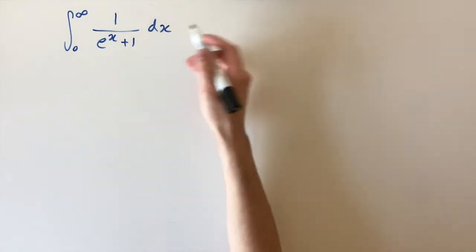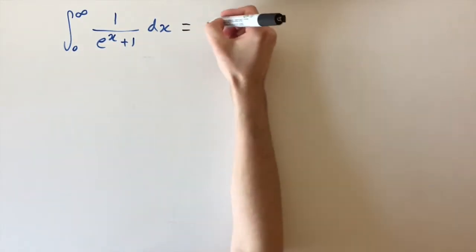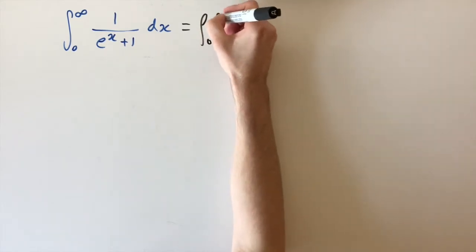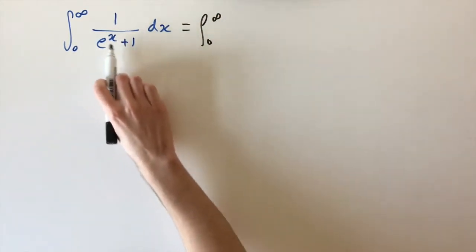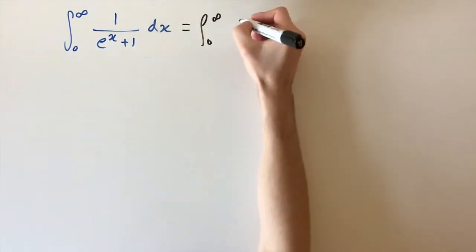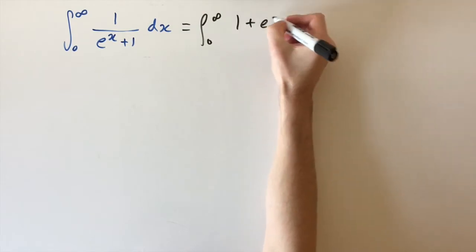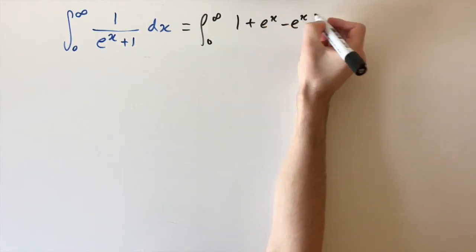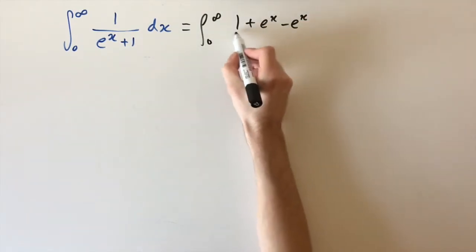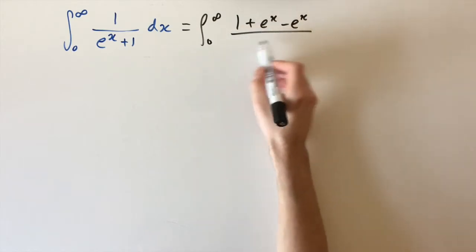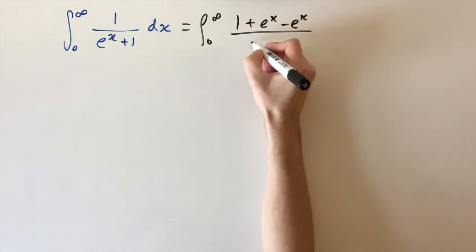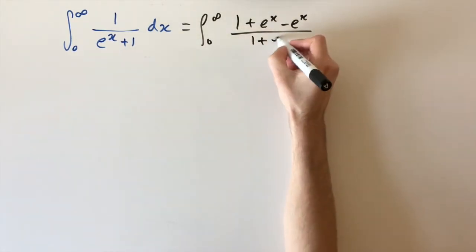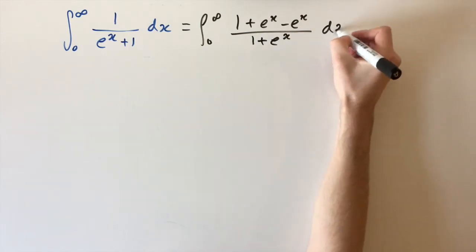I'm going to use a trick to make this a little bit quicker. We have an integral between 0 and infinity, and I'm essentially going to add 0 to the numerator. So we're going to have 1 plus e to the x minus e to the x — I haven't changed anything on the numerator — and then on the denominator that stays the same: 1 plus e to the x dx.